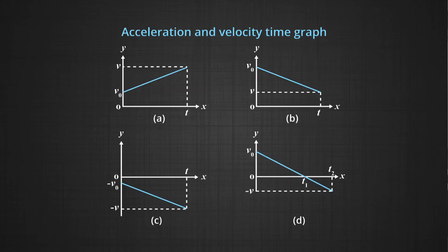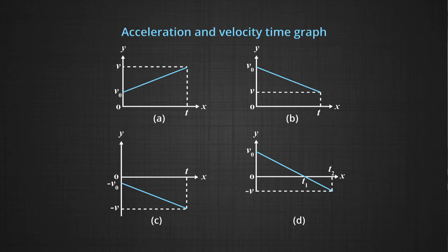Let us consider velocity-time graphs to predict acceleration. In graph A, velocity is on the y-axis and time on the x-axis. V0 is the initial velocity, and the straight line shows that velocity at time T is a value V, meaning the object accelerated from V0 to V in a time interval of 0 to T. Graph B, on the other hand, shows initial velocity V0 higher than the final velocity V, meaning this straight line graph with a negative slope indicates deceleration or negative acceleration.